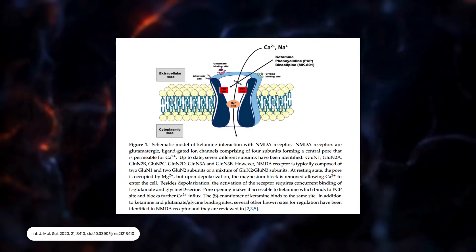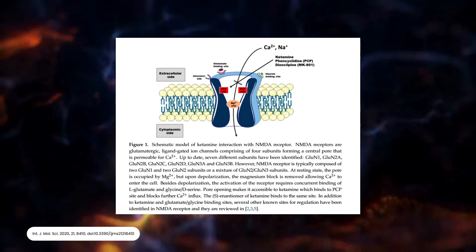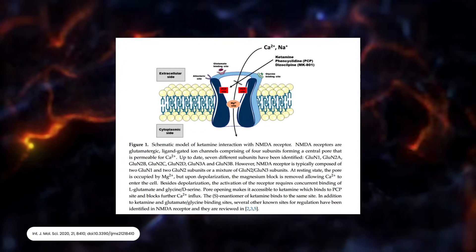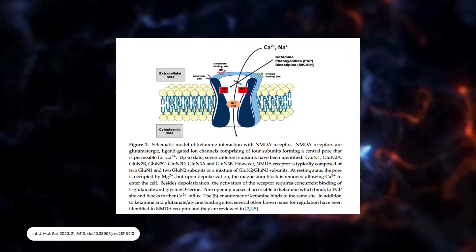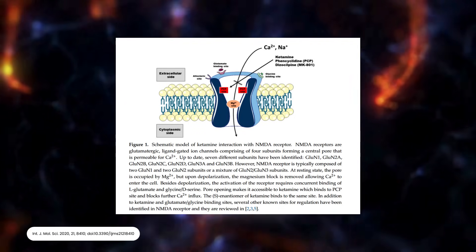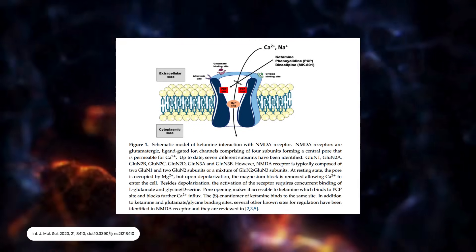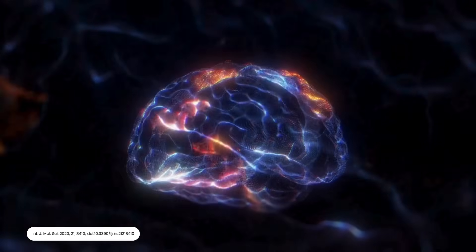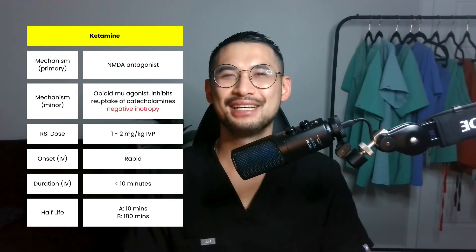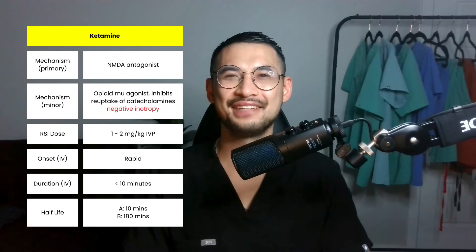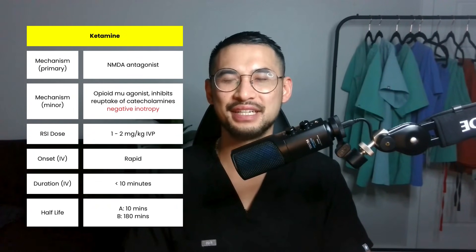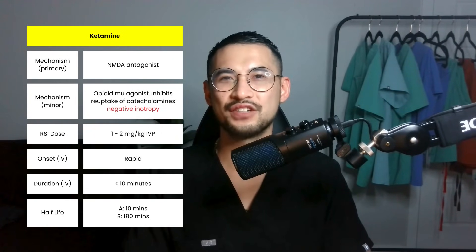Transient hypertension and tachycardia can be seen with ketamine by inhibiting reuptake of catecholamines. It preserves respiratory drive and maintains hemodynamics. Additionally, it has secondary activity on opioid mu receptors, making ketamine a two-for-one for sedation and analgesia. One of ketamine's minor mechanisms contains negative inotropic properties, which has raised concern for use in catecholamine-depleted patients, as this may contribute to more negative cardiovascular effects.